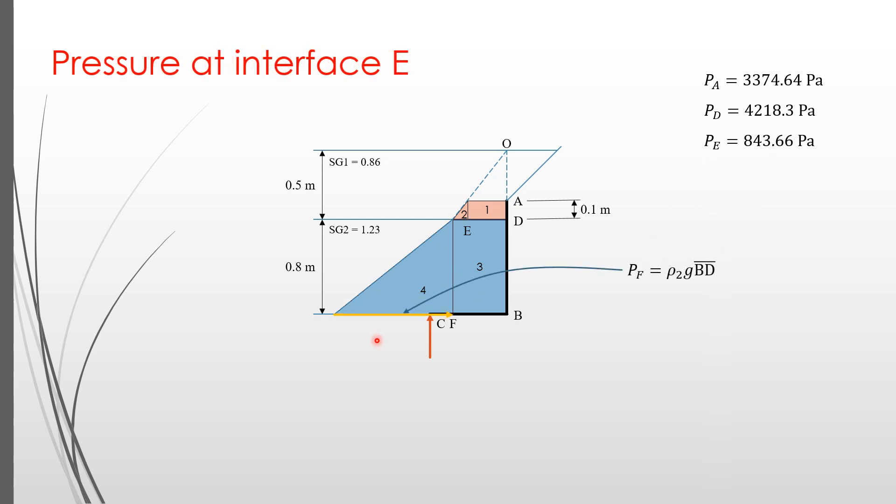The pressure representing the base of the triangle 4 is calculated using ρ₂ times g times BD, where ρ₂ is the mass density of the fluid with specific gravity 1.23, ρ₂ equals 1230 kilograms per meter cubed, and BD is the vertical distance from B to D, which is 0.8 meters. We obtain PF equals 9653.04 Pascal.